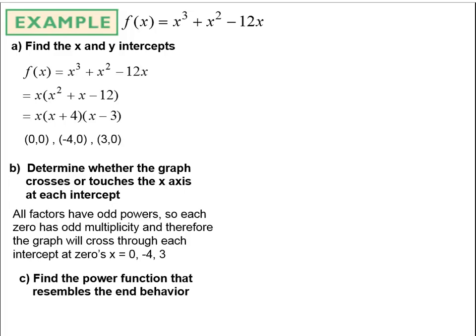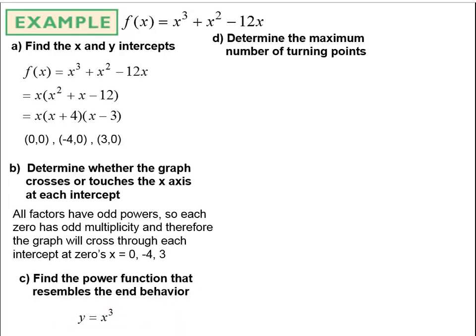The end behavior: the leading term is x cubed, so the graph has odd degree with positive leading coefficient — it goes in opposite directions at the ends (down on the left, up on the right), resembling a cubic. The maximum number of turning points is degree minus 1, which is 3 minus 1 equals 2 possible turning points at most.